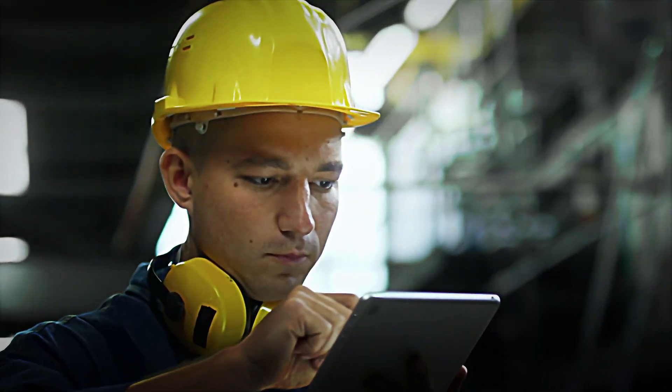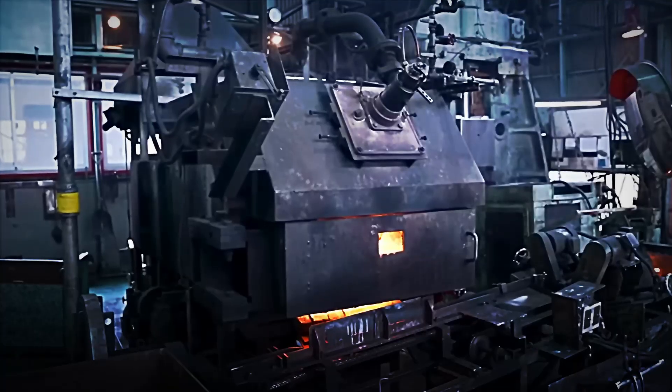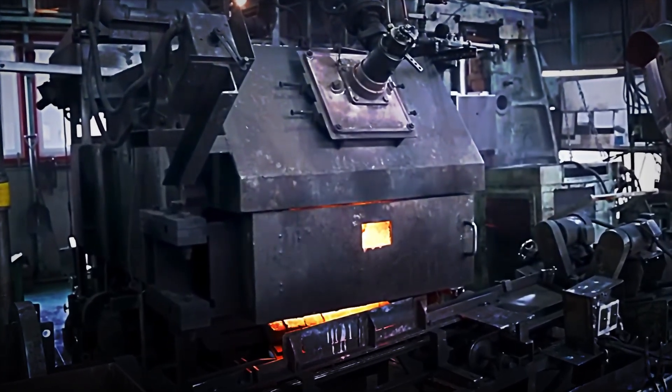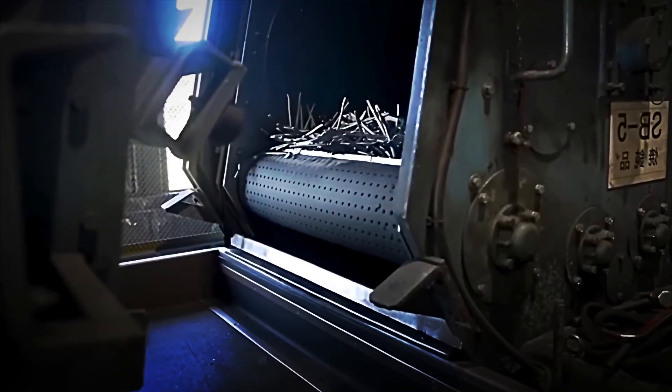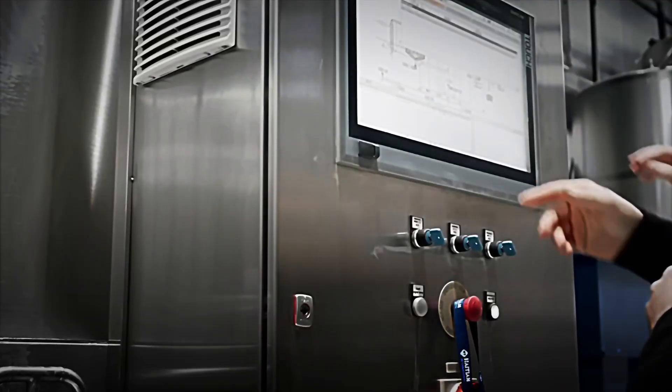After forging, the metal is subjected to internal stresses and structural changes. To correct these, the parts undergo a heat treatment known as normalizing. In this stage, the pieces are placed inside controlled atmosphere furnaces that operate between 780 and 920 degrees Celsius. There, they are kept for a specific time to allow the grains deformed during forging to dissolve and new, finer and more homogeneous grains to form.